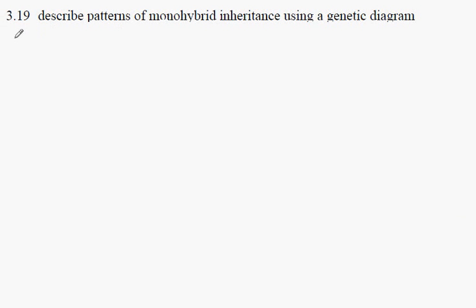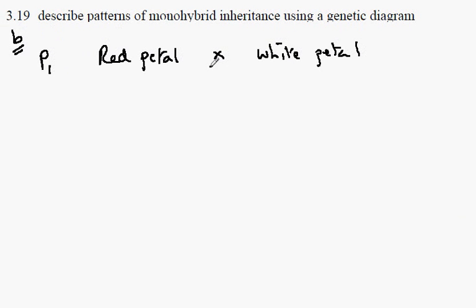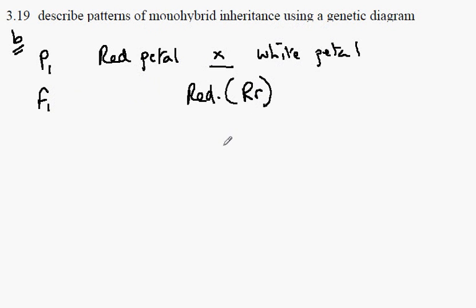IGCSE Biology 319b. In 319a, we carried out a cross between two parents — the P1 generation — where a red petal plant was crossed with a white petal plant. When we say cross, we mean reproduction: pollen grains are transferred from one plant to the ovules of the other, just as sperm cells are transferred to egg cells in animals. We worked out that the first generation, the F1, were all red and heterozygous for the allele for petal colour.